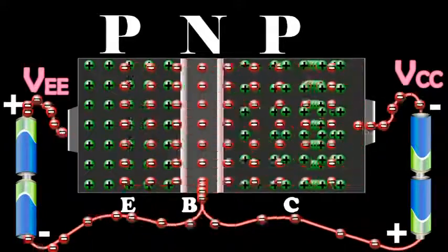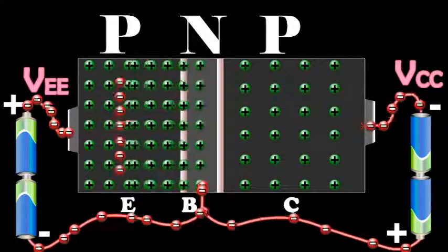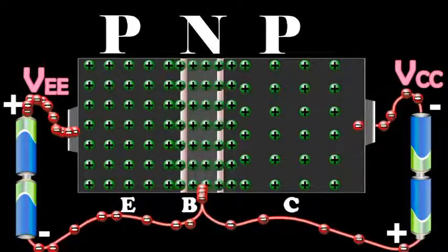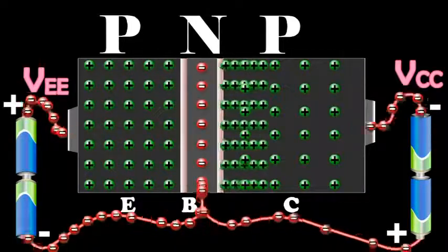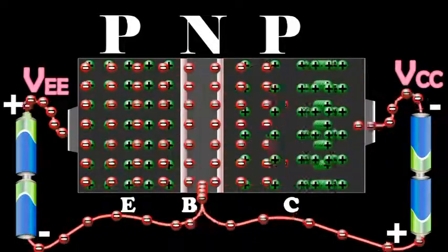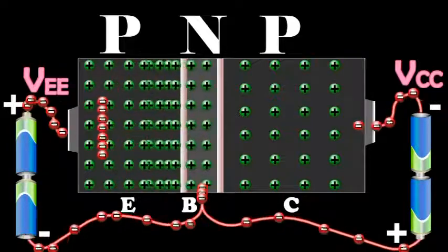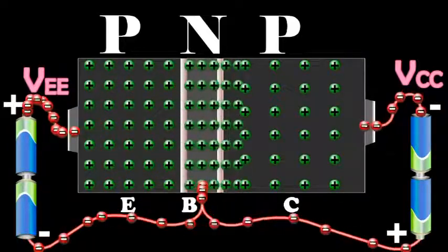At the same time, an equal number of electrons flow from the negative terminal of VEE and reach the positive terminal of VCC. The flow of holes per second from the base to the collector gives rise to the collector current IC from the base to the collector.